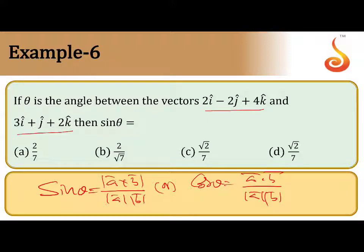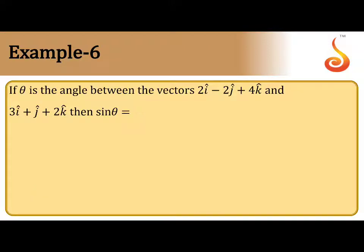You can use any formula, but if you find cos, you convert it into sin using right angle triangle. Otherwise, you can find a cross b, calculate magnitude of a cross b by magnitude of a into magnitude of b. That anything is fine. So now let us take the given vectors are a bar and b bar.